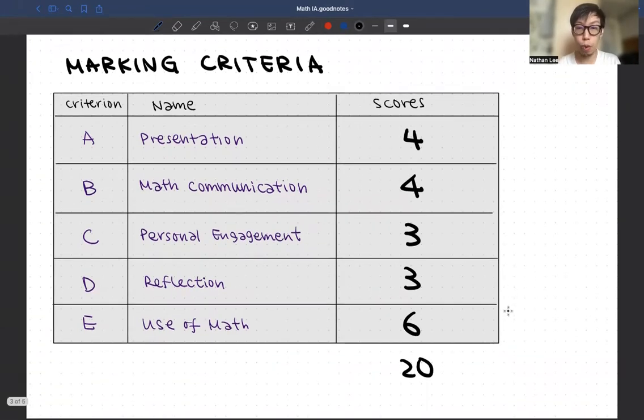Last but not least, this is the most weighted part, use of math, six points. Whether you calculate things correctly, whether the math level that you use is up to par on the level that you are studying. This marking criteria is the same for both math applications and math approaches, AA and AI, and the same for both HL and SL. If you're using the math, make sure that they are up to the standard of what level you are studying, and make sure that they are calculated correctly. Because if you got it wrong, you get at most three out of six points here.